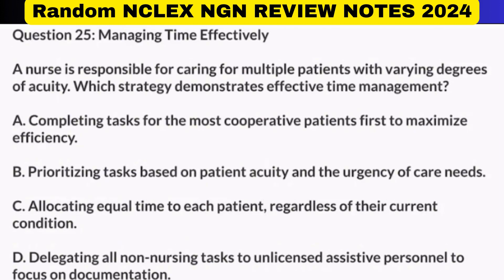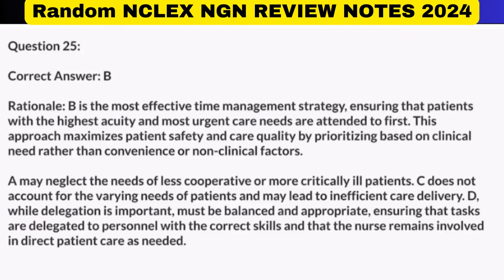C. Allocating equal time to each patient, regardless of their current condition. D. Delegating all non-nursing tasks to unlicensed assistive personnel to focus on documentation. Correct answer: B. Rationale: B is the most effective time management strategy, ensuring that patients with the highest acuity and most urgent care needs are attended to first. This approach maximizes patient safety and care quality by prioritizing based on clinical need rather than convenience or non-clinical factors. A may neglect the needs of less cooperative or more critically ill patients. C does not account for the varying needs of patients and may lead to inefficient care delivery.